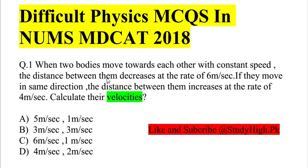So there are two bodies. When they move towards each other, the distance decreases at the rate of 6 meters per second. If both move in the same direction, then the distance increases at 4 meters per second. We have to calculate both velocities.